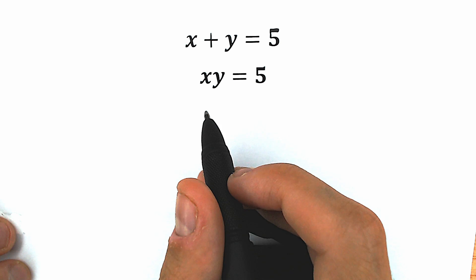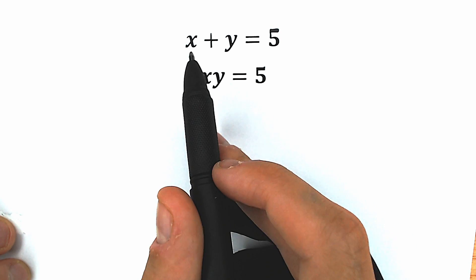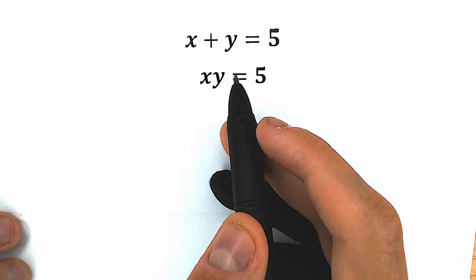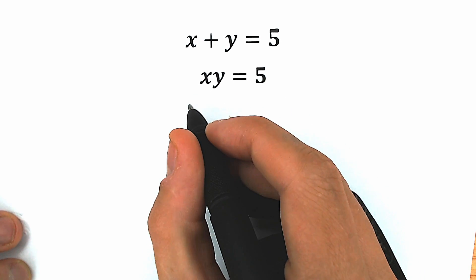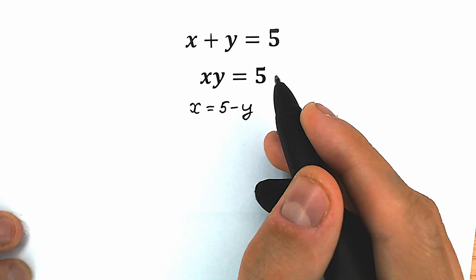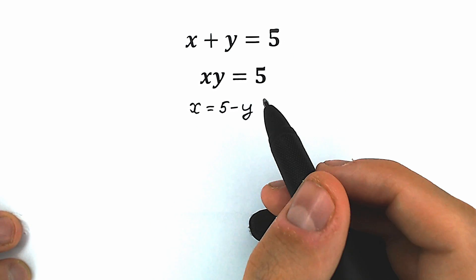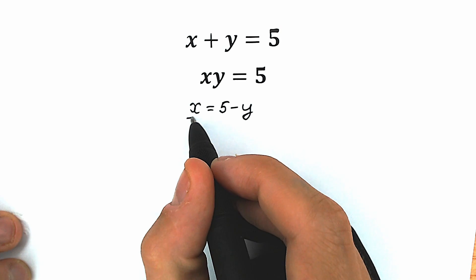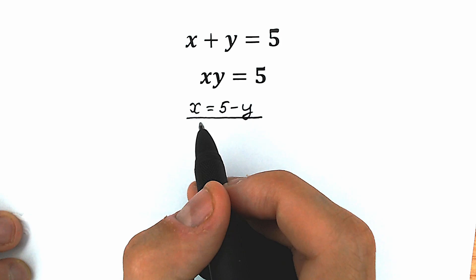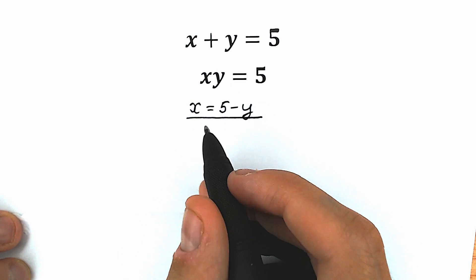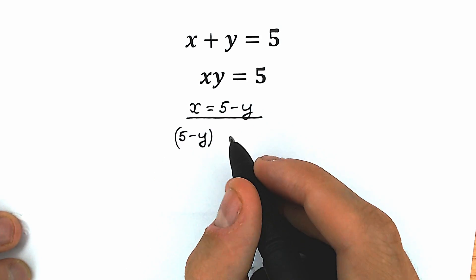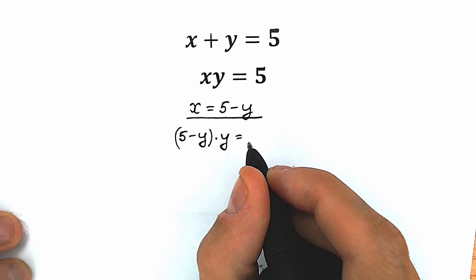So right now let's solve this really interesting school question. First of all, we have x plus y equal to 5, so from here we can easily express x and plug it into the second equation. Let's do this easy step: x equal to 5 minus y from the first equation. And right now let's plug in this x into the second equation, so we have 5 minus y, times y, equal to 5.